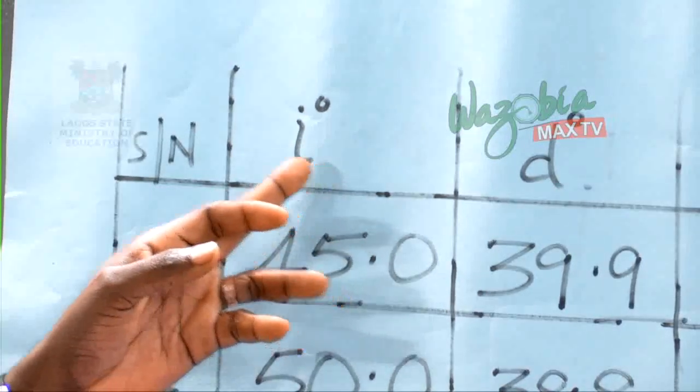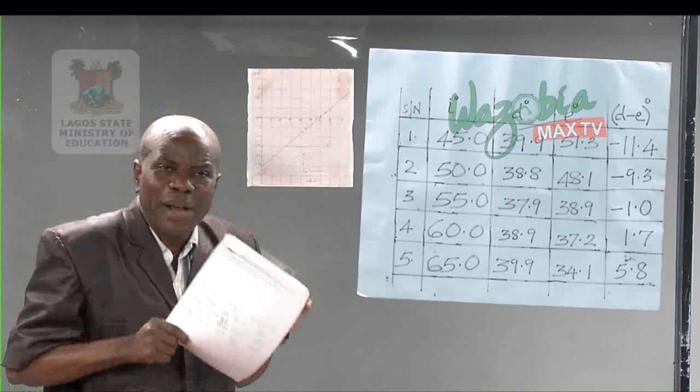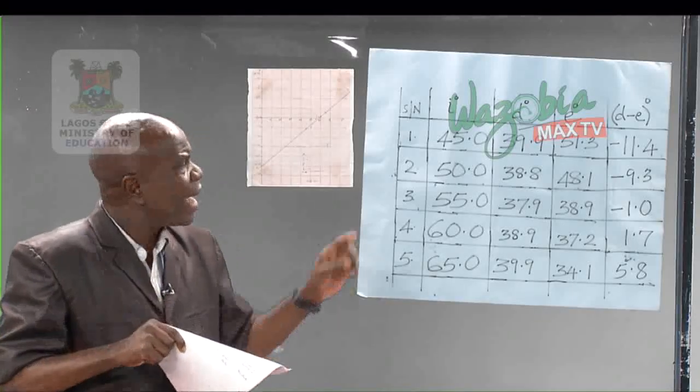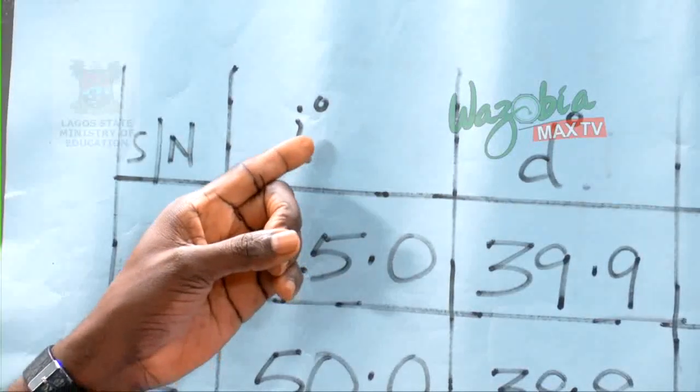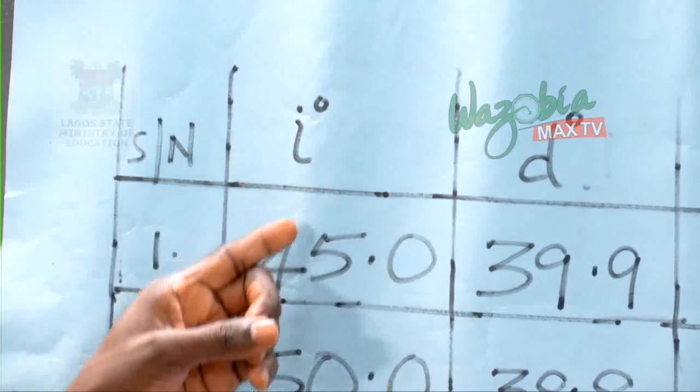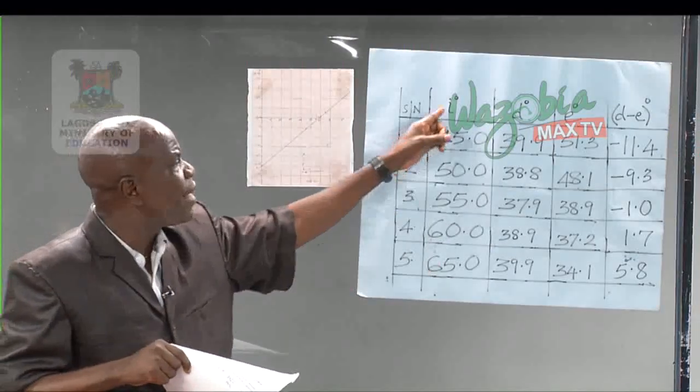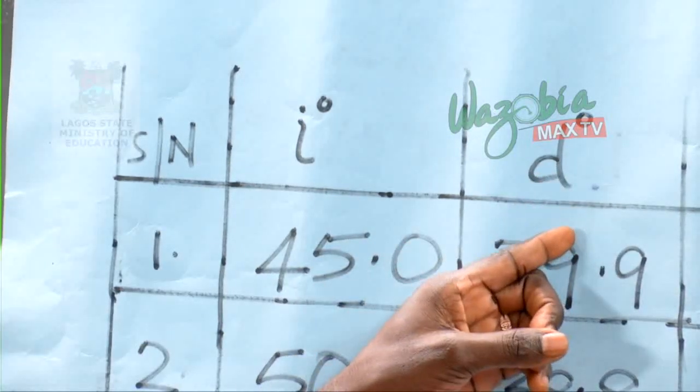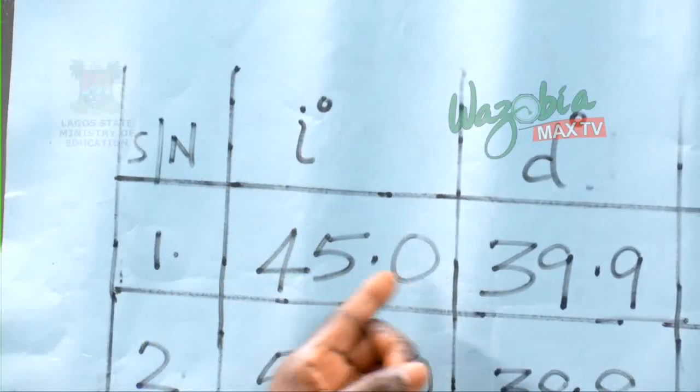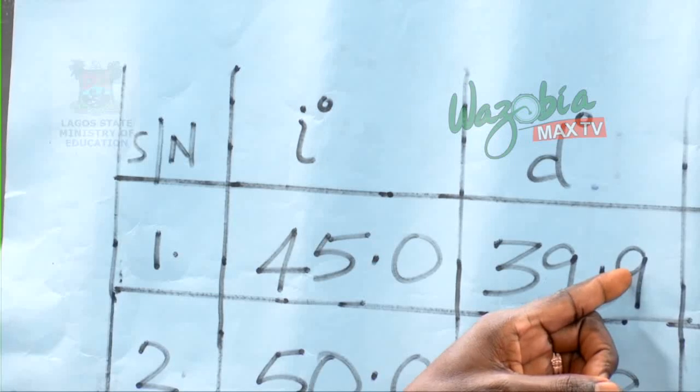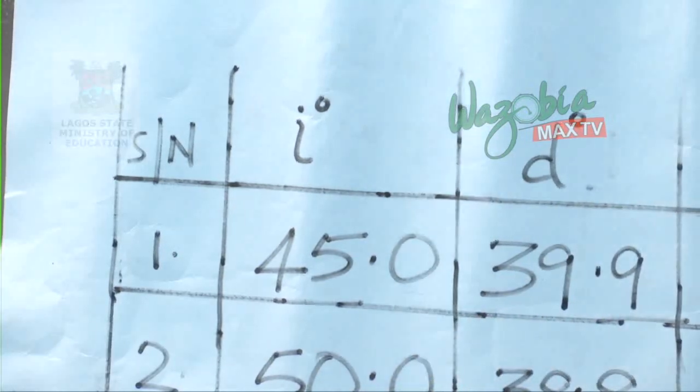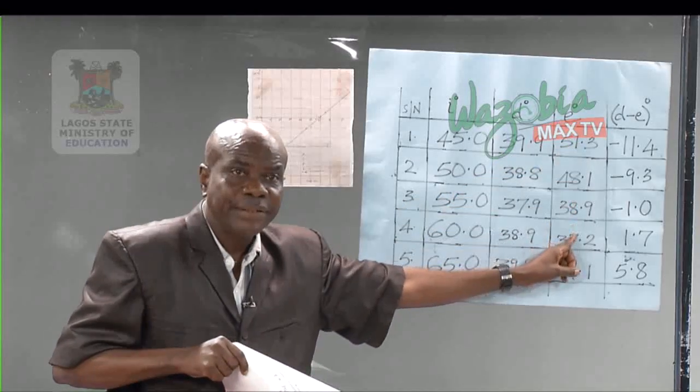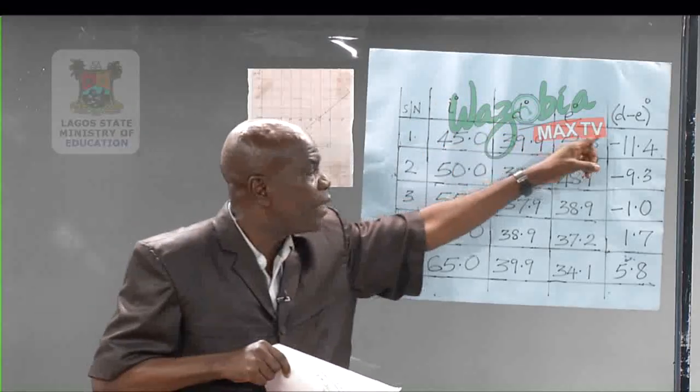You have the prism, the regular prism. You are given the angle of incidence. To get that one, you must first get the normal, and the normal is always perpendicular to that surface. It is always at right angles. Having gotten the normal, then you can get the angle of incidence. These are the values for the angle of incidence. For every angle of incidence, you have the angle of deviation, that is your D. When the angle of incidence was 45 degrees, I got 39.9.